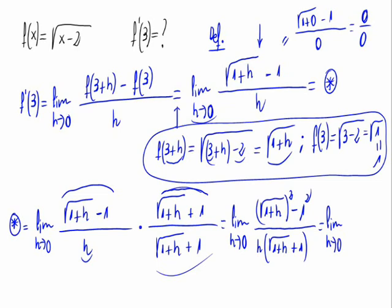On the numerator of the limit we have 1 plus h minus 1 divided by the same denominator as before.